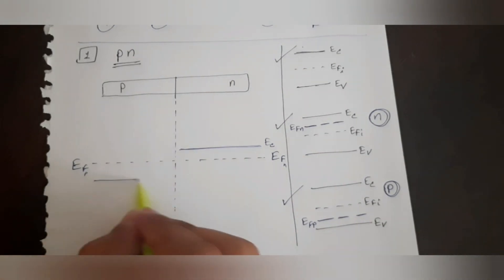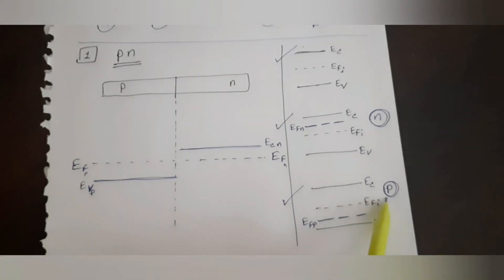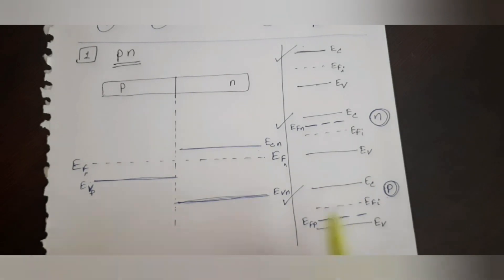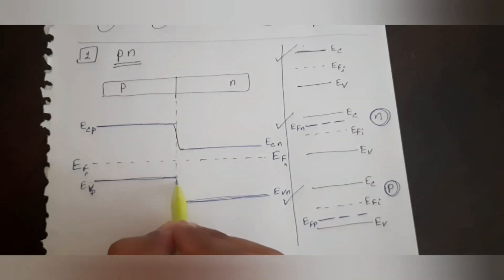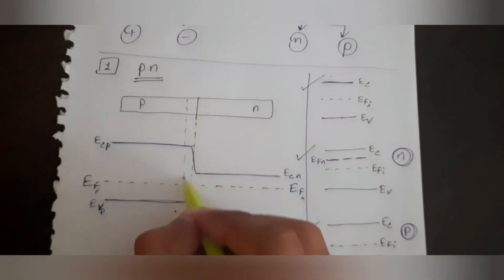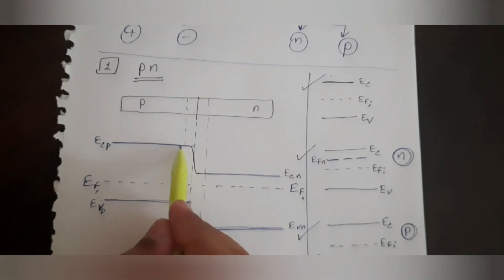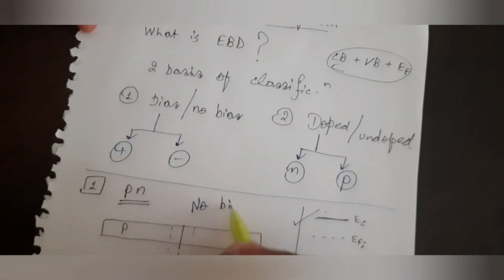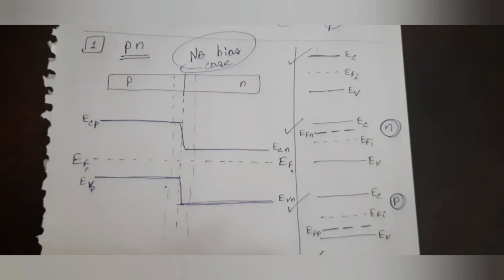On the right-hand side I have shown how N-type and P-type semiconductors, when isolated, have their energy diagrams. When these P and N-type semiconductors are joined as a junction, we draw their energy band diagram accordingly: on the P side, the valence band energy level is placed closer to the Fermi level, and on the N side, the conduction band energy level is placed near the Fermi energy level. There is also a depletion region present near the junction. This was the energy band diagram for the PN junction with no bias applied.